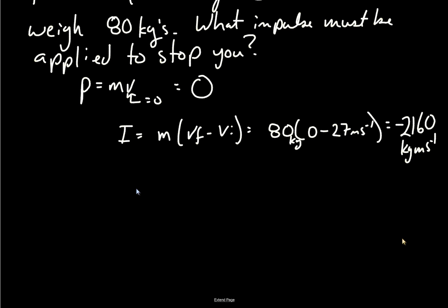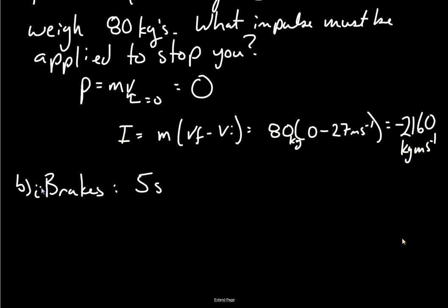That's part A. Part B: let's think about the ways you could come to a stop if you're driving in a car. The preferred way is to use the brakes — roughly how long would it take to stop from highway speeds? Let's say 5 seconds; you see a yellow light, apply the brakes, and come to a stop. That's fairly heavy braking but not too bad. Option two — we don't really like this one — but option two is you hit something: a collision.